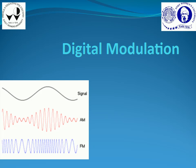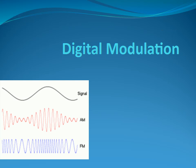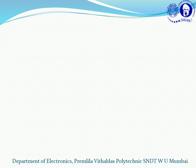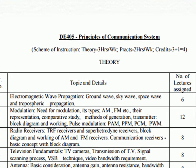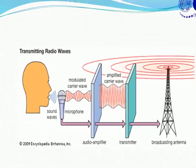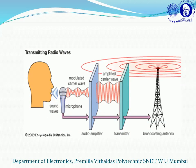Telematics is a subject which we teach here in seventh semester of diploma electronics to our polytechnic students. Here we will be discussing about Chapter 1: Digital Modulation. In your previous semester you had a subject called Principles of Communication, where your teacher must have taught you about modulation. Can anyone define modulation for me?